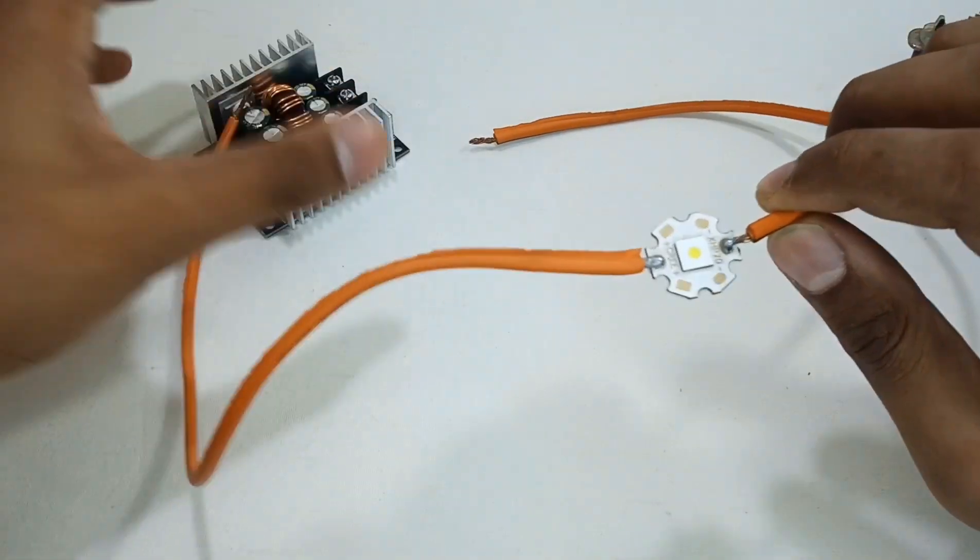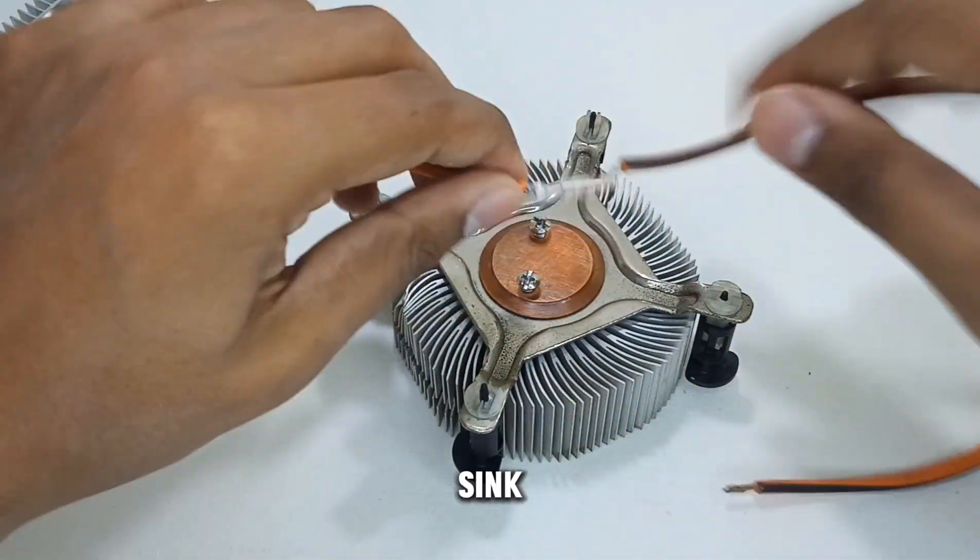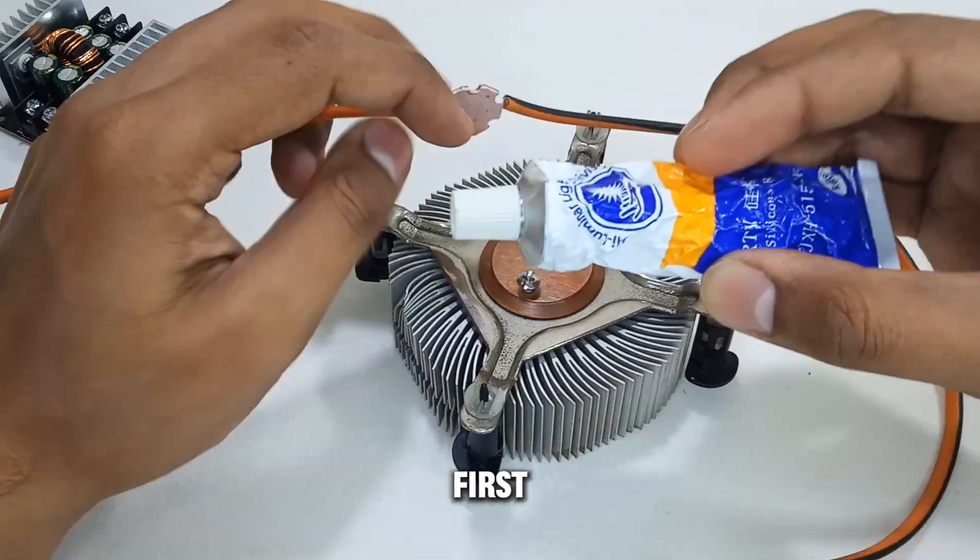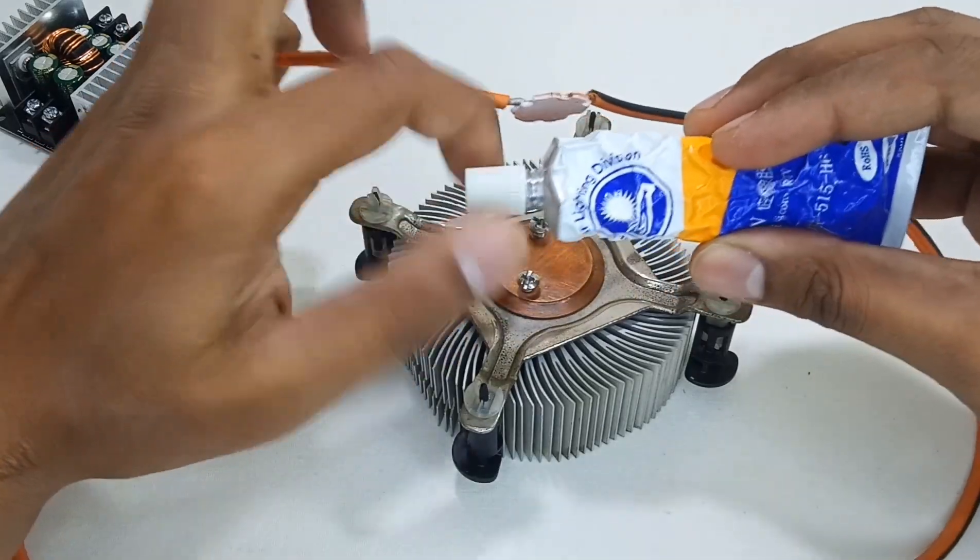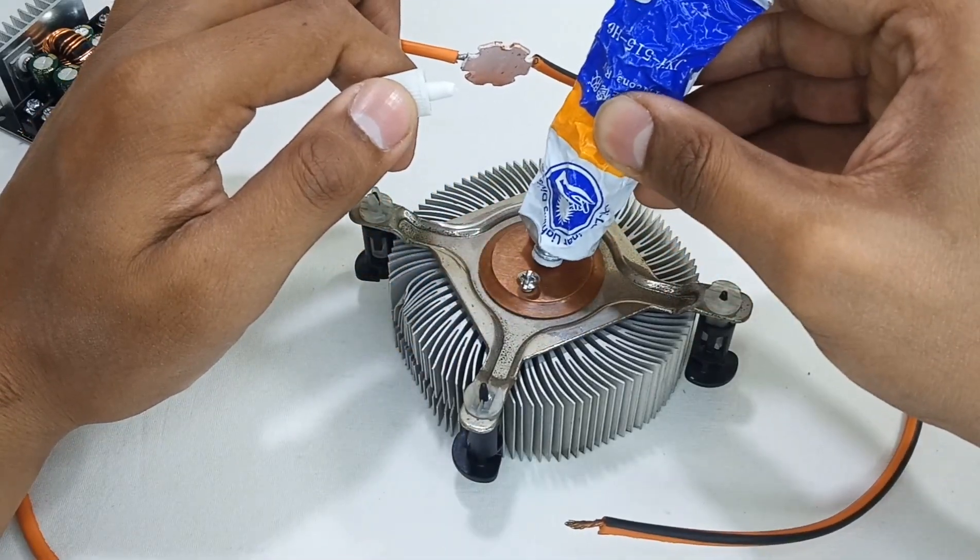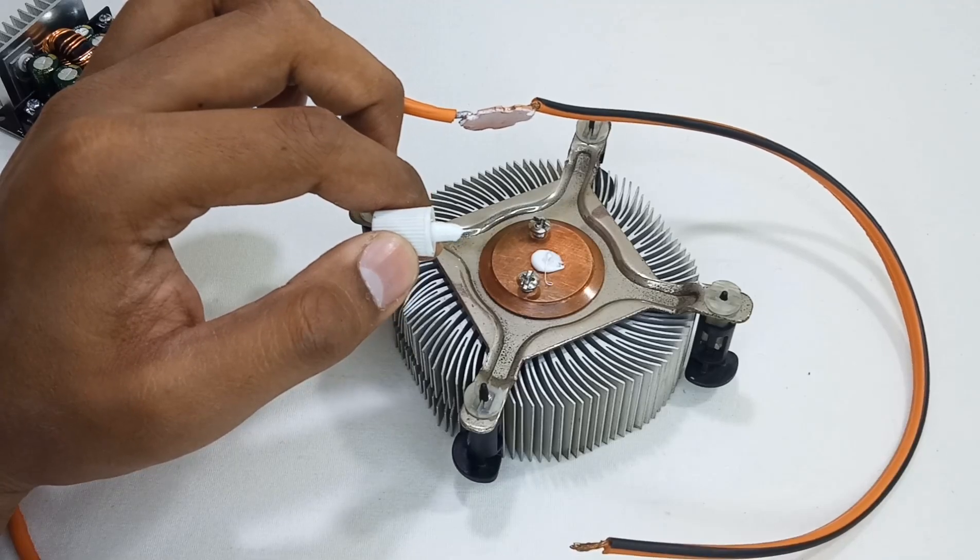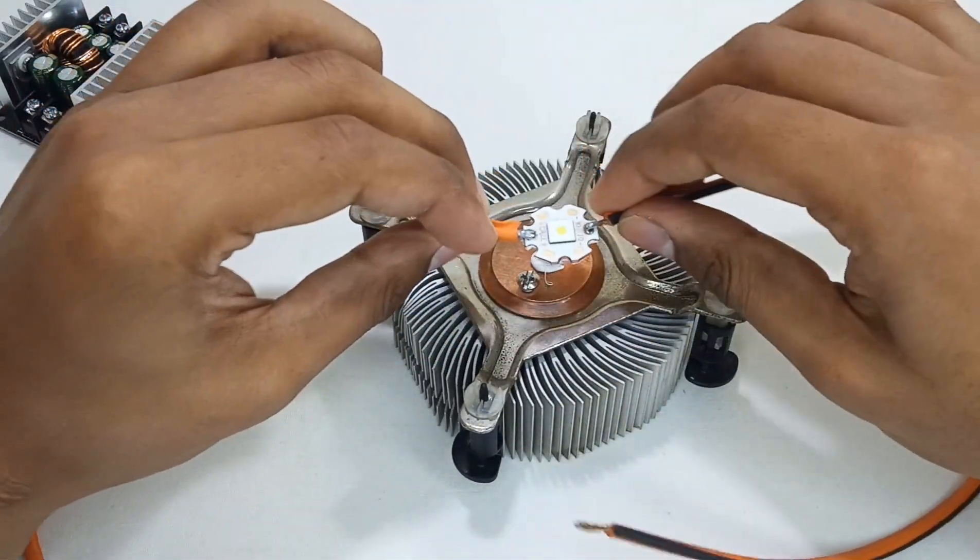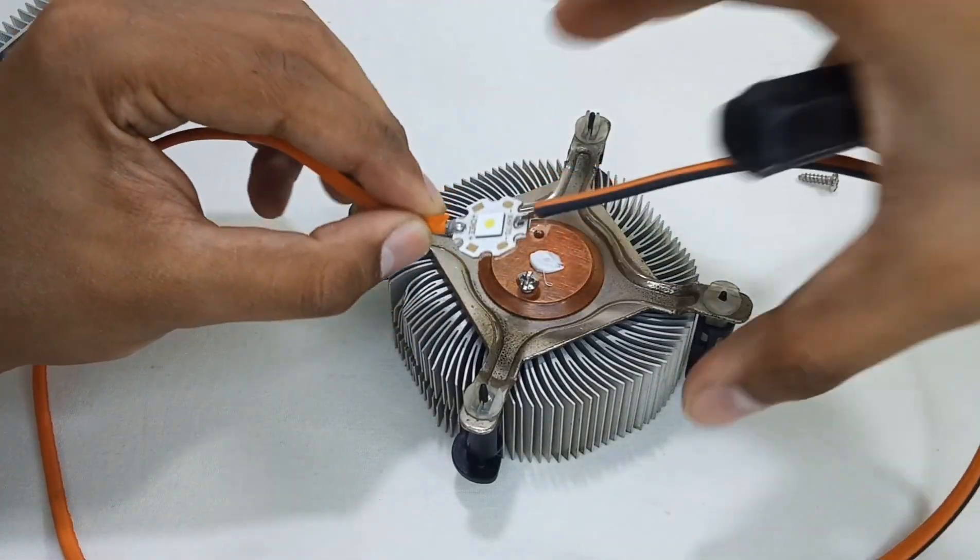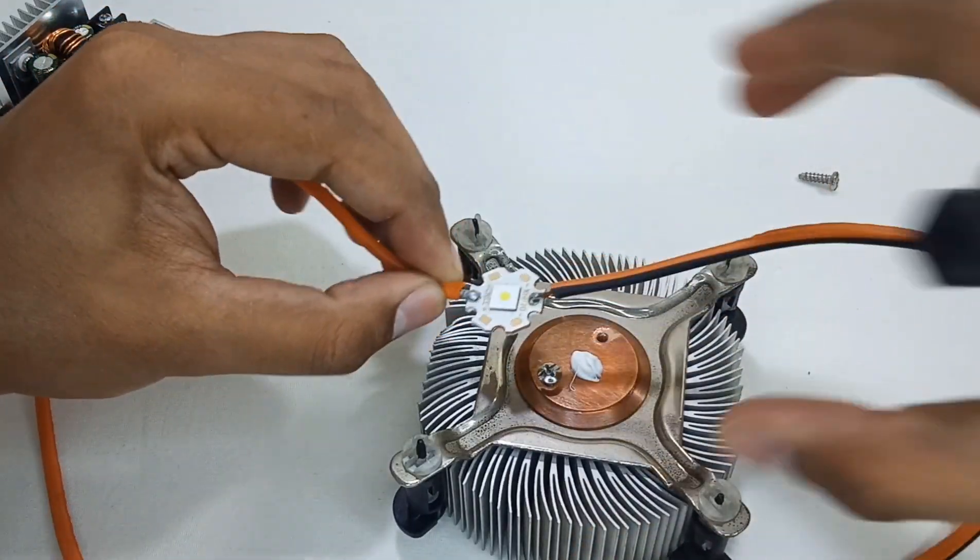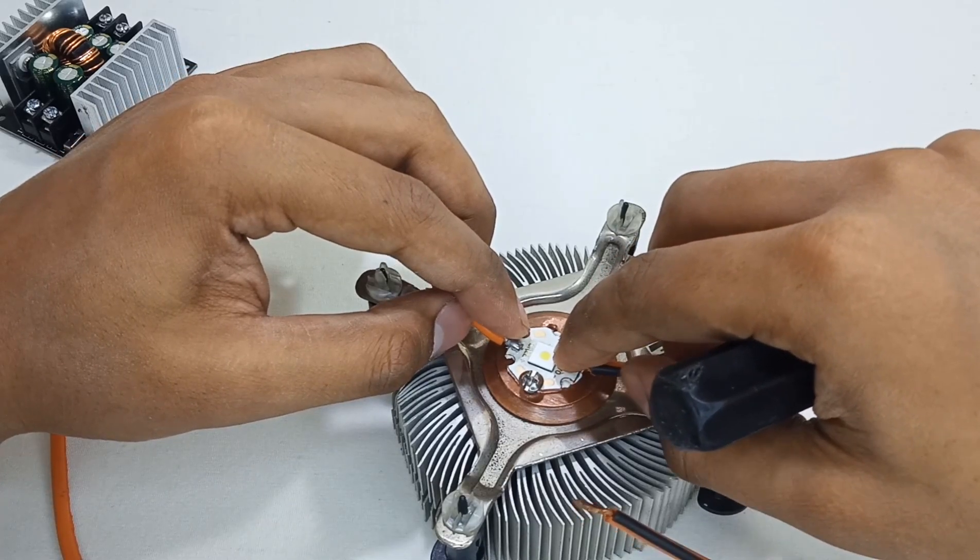So first of all, mount it on this big heatsink. You need this heatsink compound. One hole is unscrewed to fit it in the place nicely.